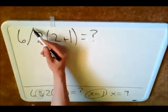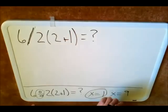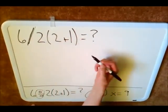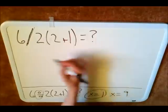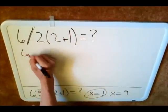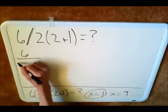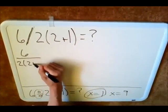And this slash, it represents a fraction line. So we can rewrite this problem on paper to look like this. 6 over 2 times 2 plus 1.